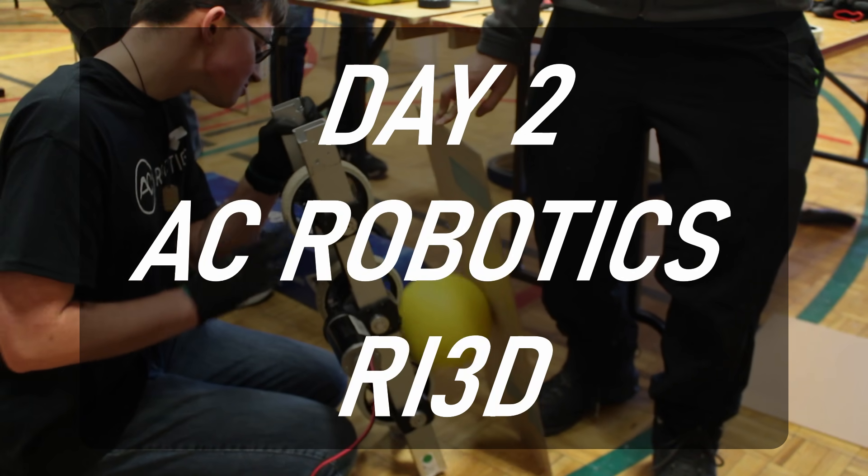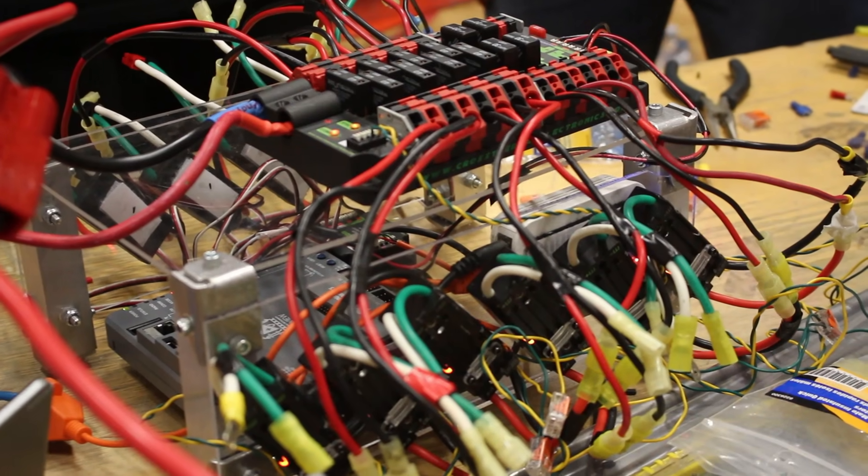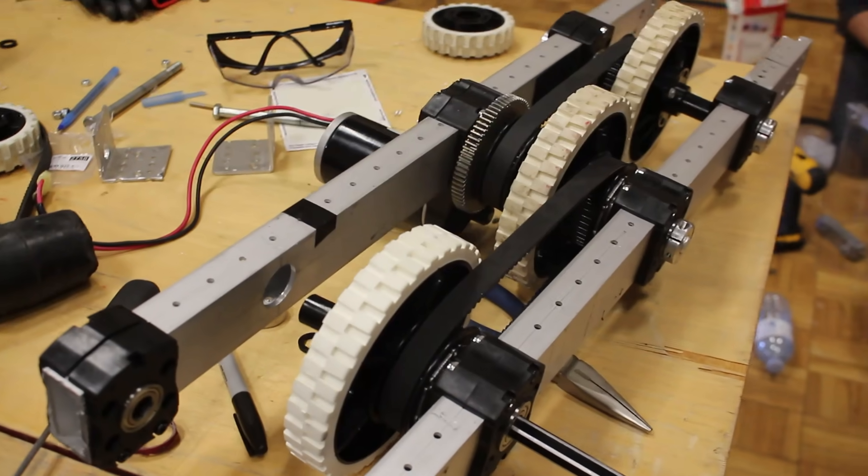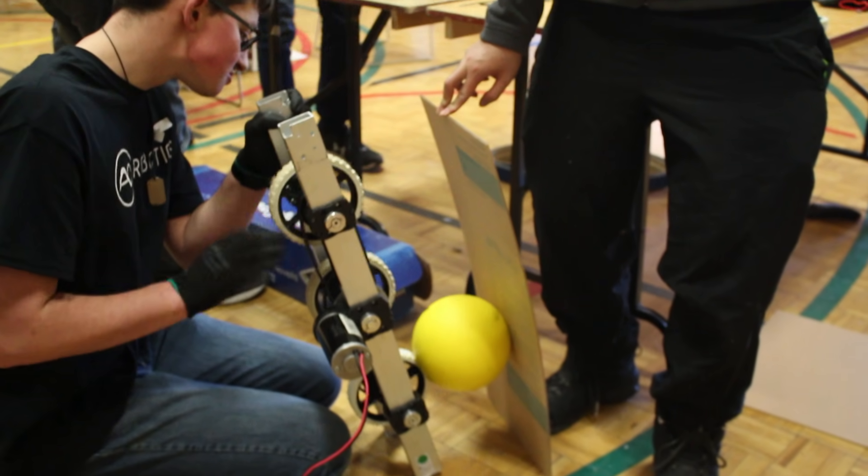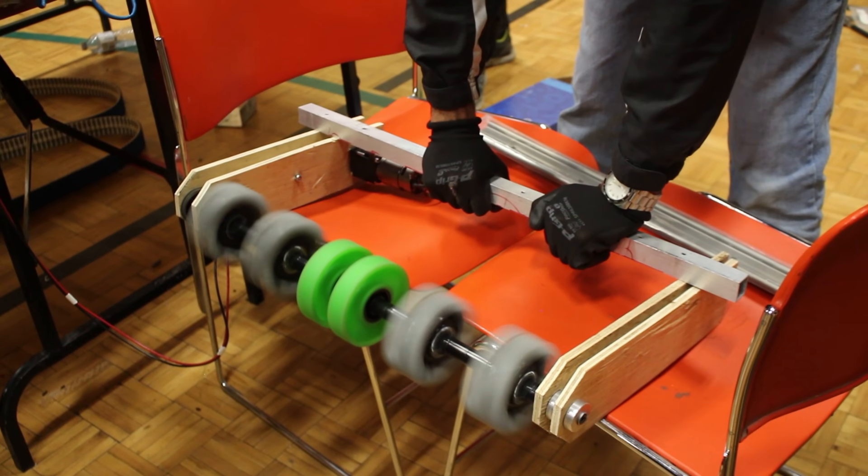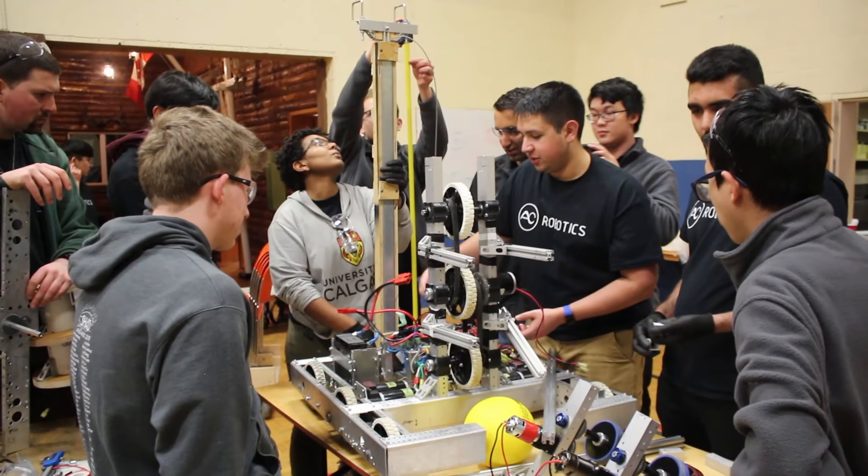It is now day 2 of the AC Robotics RI3D build. The team began working on an electronics box, modifying the shooter with a metal frame, finishing the conveyor belt hopper mechanism, exploring a vision system, figuring out the ball intake mechanism, and completing the single stage elevator and winch.